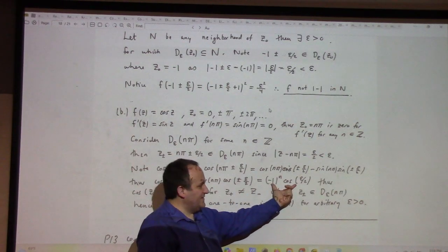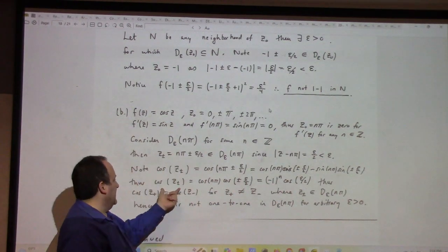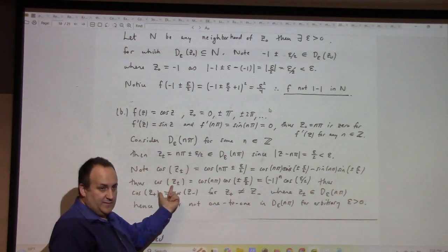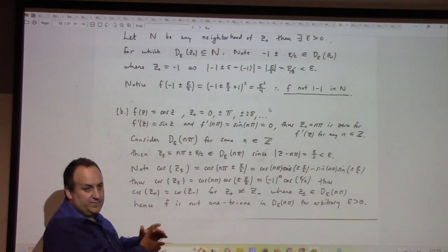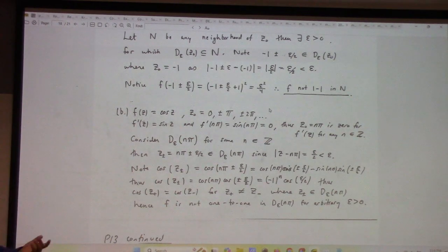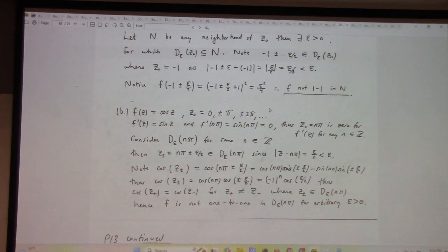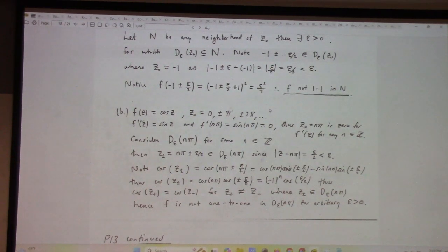Well, that's the same value, despite the fact that I have different inputs, which shows you that there's two points in the epsilon ball which map to the same value, and yet they're different. Therefore, the function's not 1 to 1 in that epsilon disk. Epsilon being arbitrary, that answers the question.